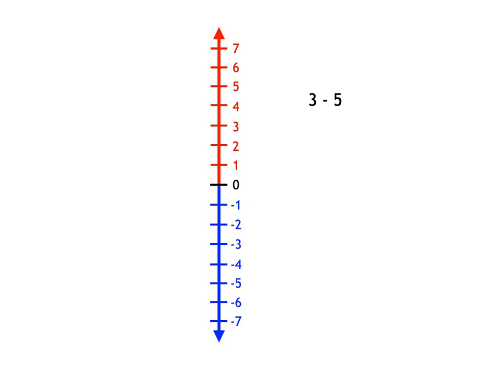So we can start with learners working on something like 3 subtract 5 as starting at 3 and then going down 5 steps. And initially it's quite fine if learners are just literally walking down the 5 steps to get to the answer of negative 2.